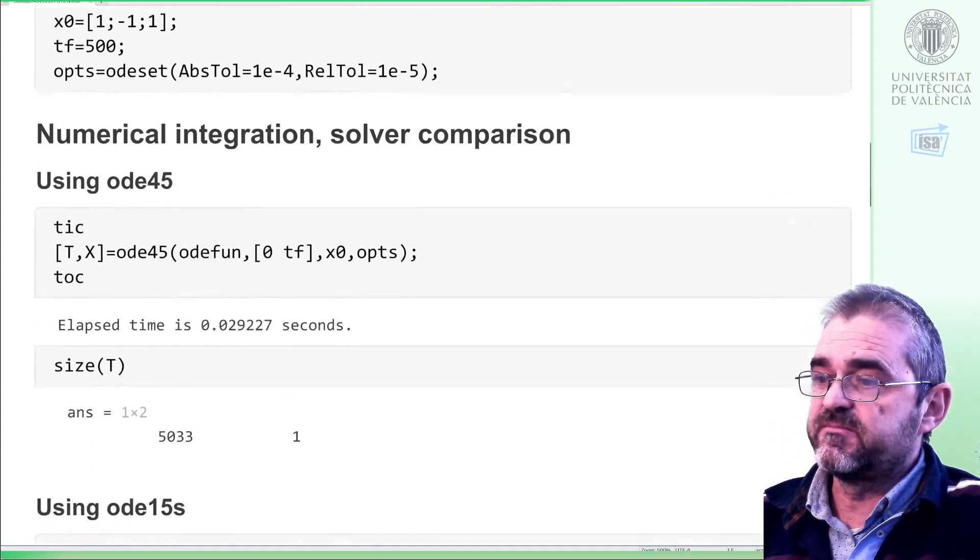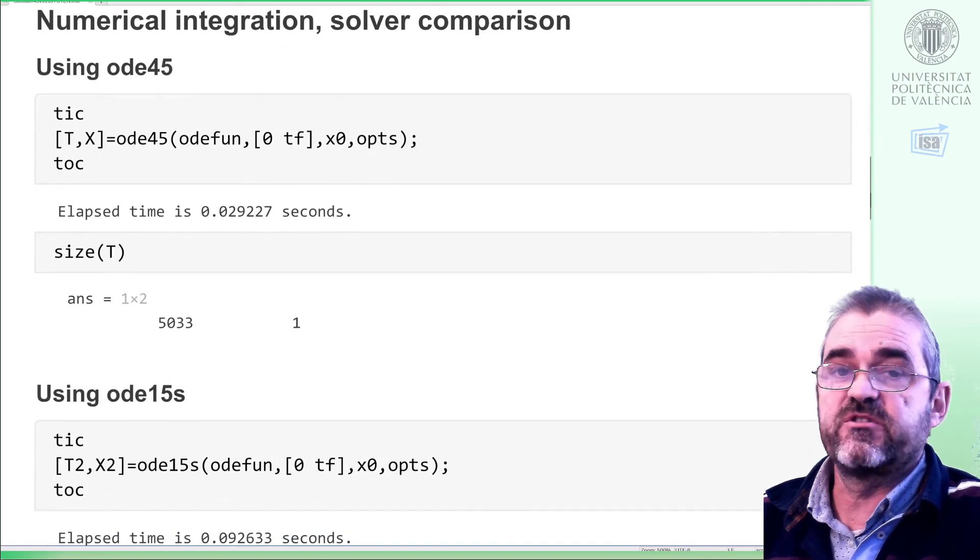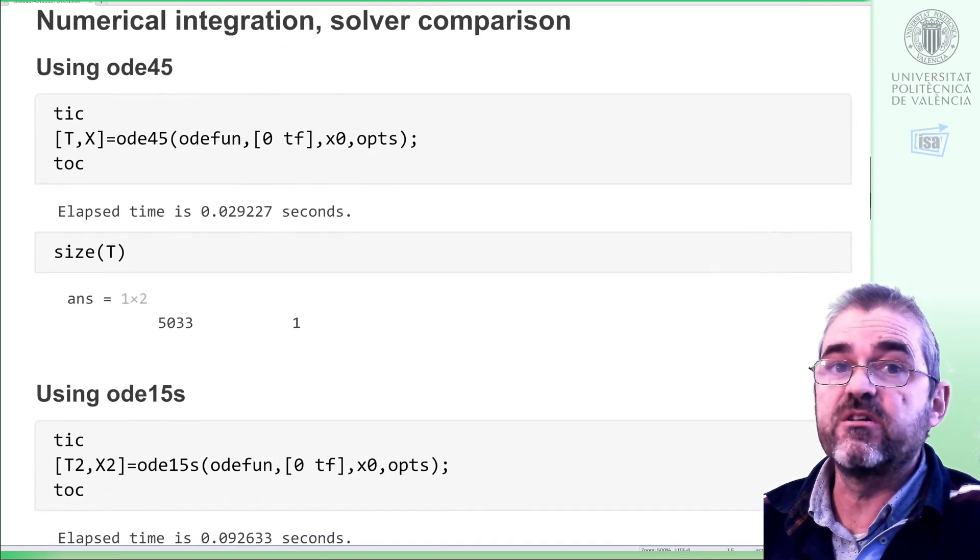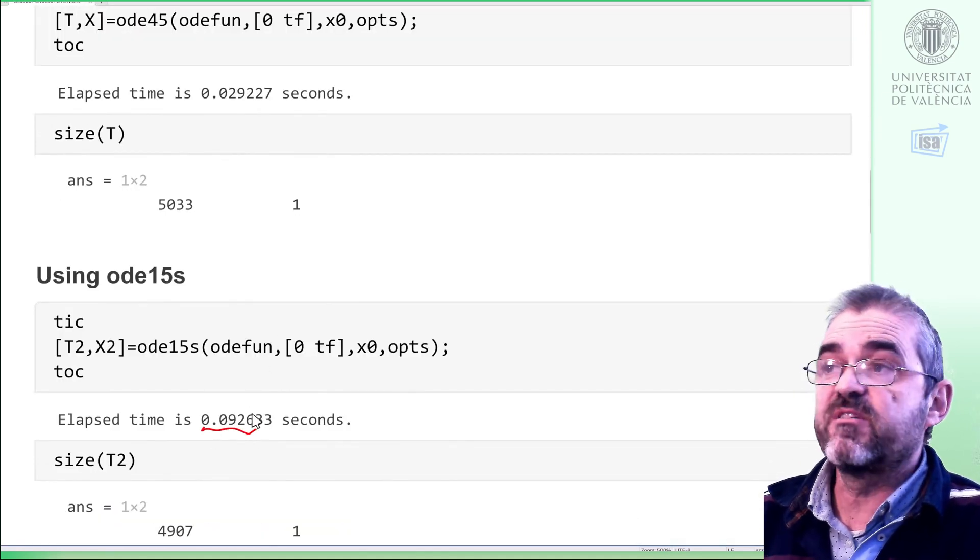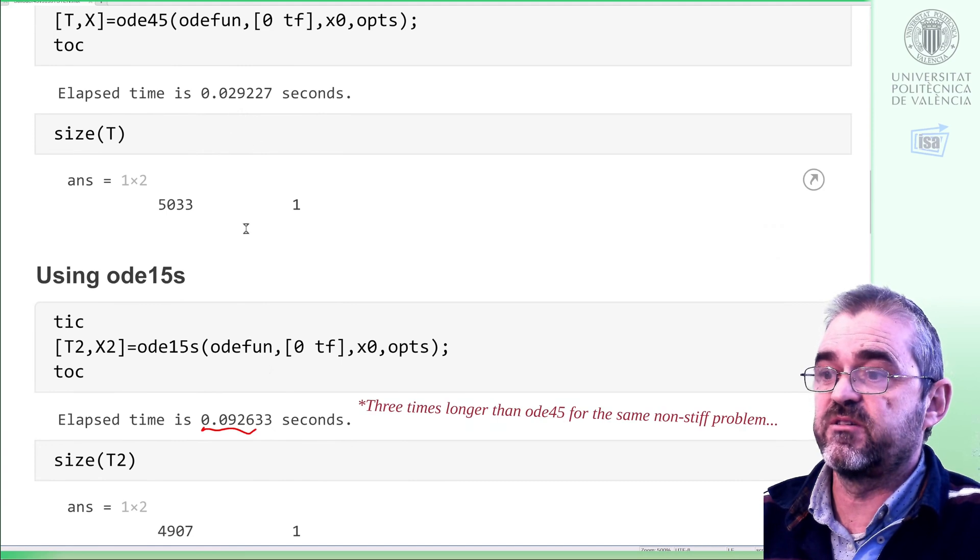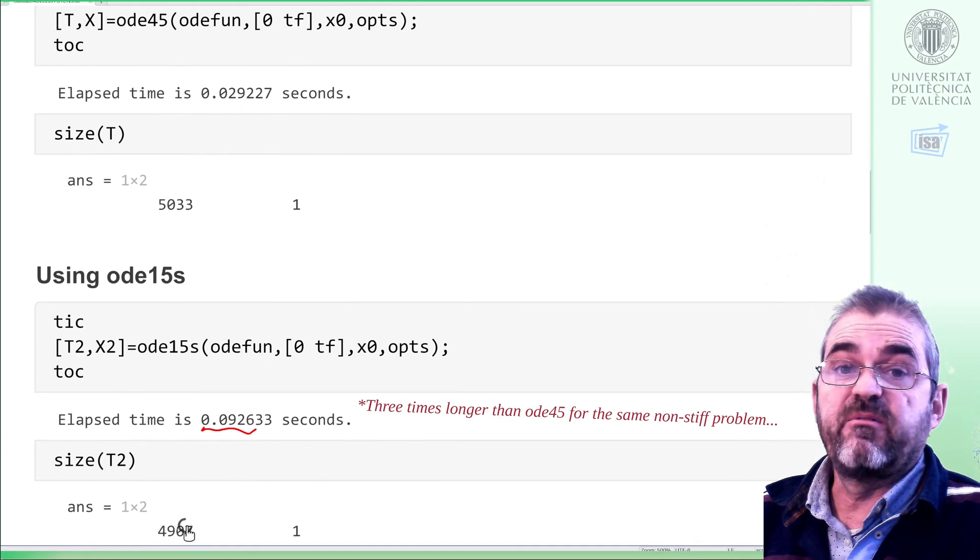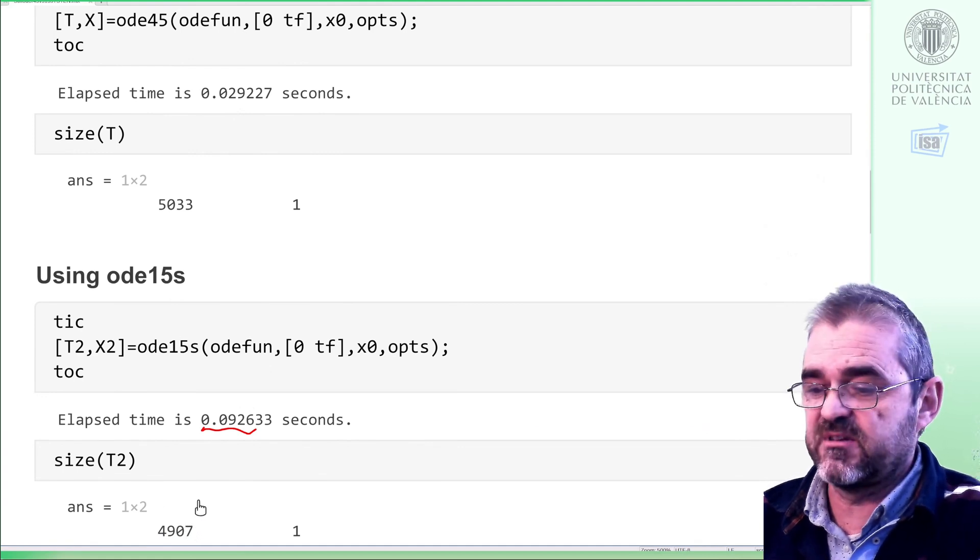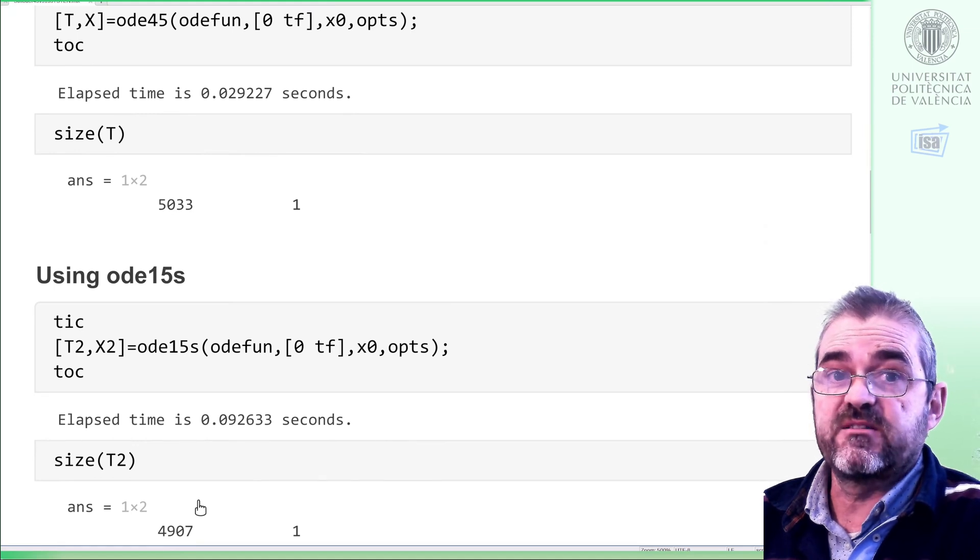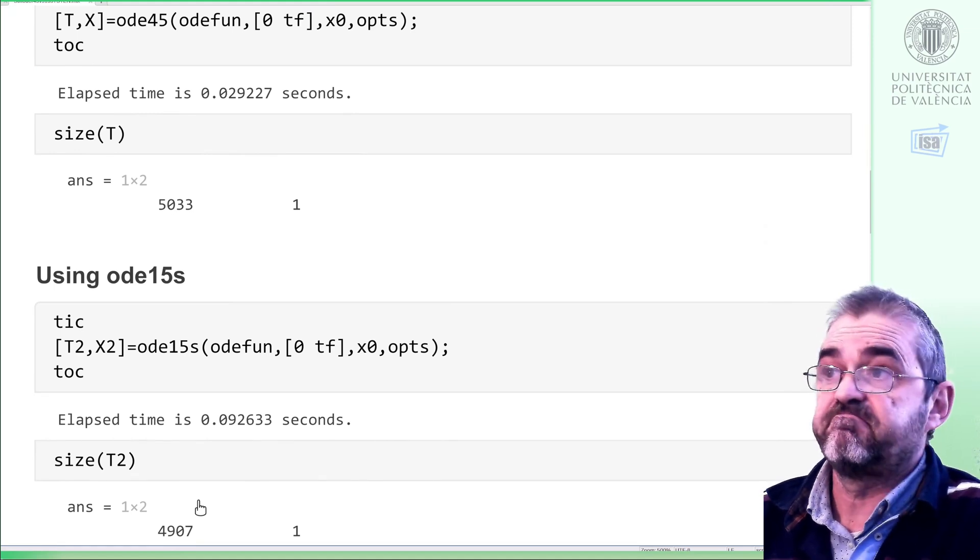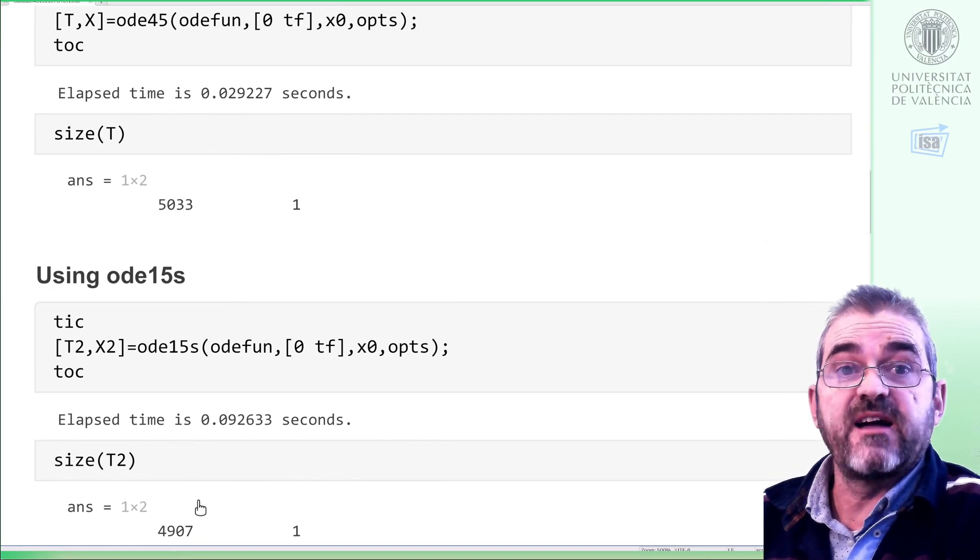If I compare another solver, ODE15S, which is for stiff differential equations, but I am using it in a non-stiff situation. Well, at the end, it took 90 something milliseconds instead of 30. So it took like three times longer to execute and around 5000 points. So more or less the same. So in this non-stiff case, it seems that ODE45 had the winning hand. It got the same thing in less than one third of the time.